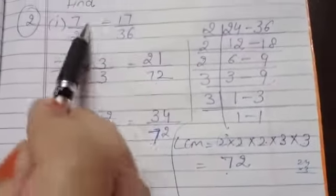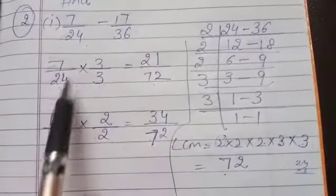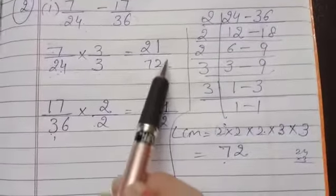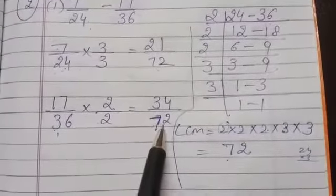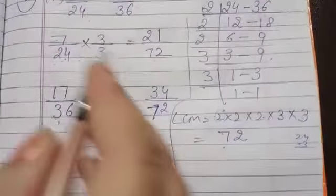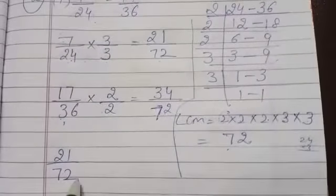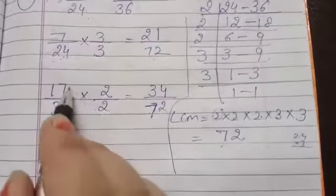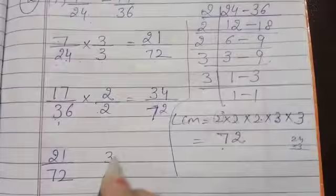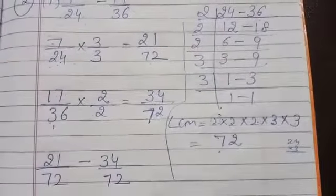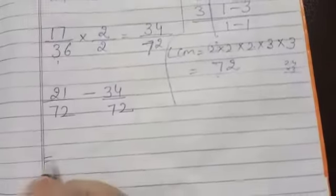We have to change our rational numbers with the same denominators by taking their LCM. So that means 7 by 24 becomes 21 by 72, and 17 by 36 becomes 34 by 72. And we write subtraction. Now we solve it.